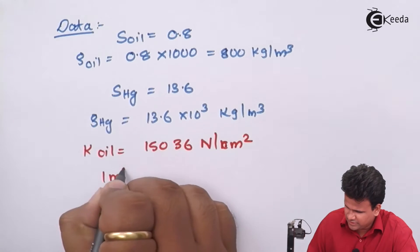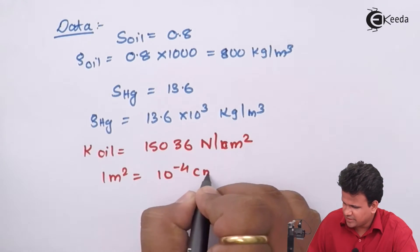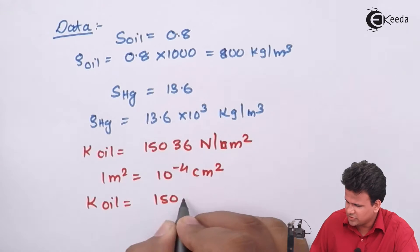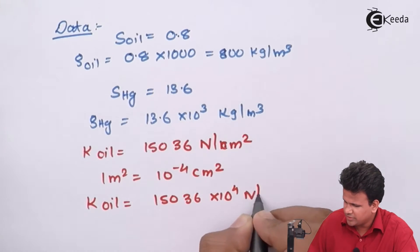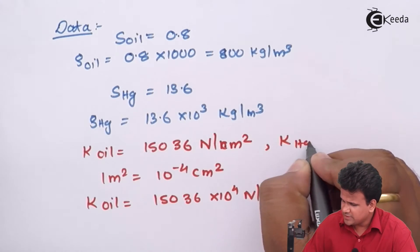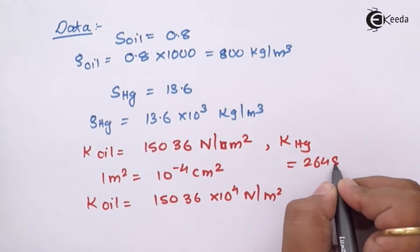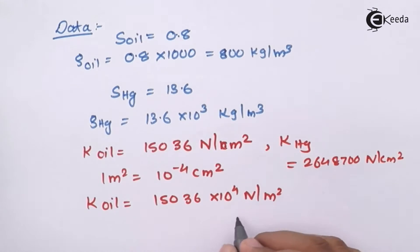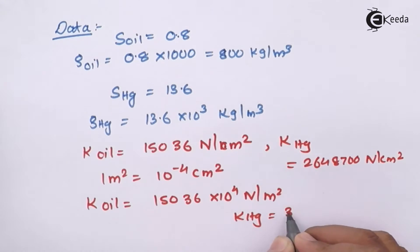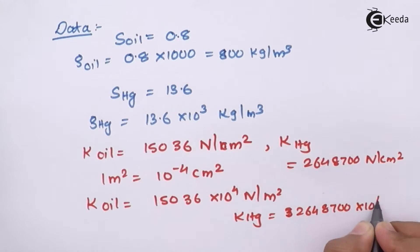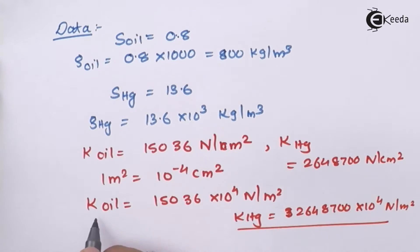We know that 1 cm² = 10⁻⁴ m², so converting units: K of oil = 15036 × 10⁴ N/m², and K of mercury = 26488700 × 10⁴ N/m². We now have both bulk modulus values in consistent units.